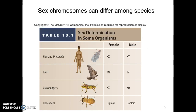Sex chromosomes vary among species. In humans we have X's and Y's for males and females. In birds we have ZW and ZZ. In grasshoppers, XX and XO. In honeybees, we have diploid females and haploid males, because males don't carry the full amount of genetics — they're sterile workers. There's a lot of variation in sex chromosomes across different species. Our primary focus is humans, but think about how this differs across species and how it plays a role in producing variation among offspring.